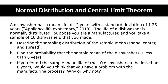New objective. A dishwasher has a mean life of 12 years and a standard deviation of 1.25 years. The life of a dishwasher is normally distributed. Suppose you are a manufacturer and you take a sample of 10 dishwashers. Part A: describe the sampling distribution of the sample mean — we want to discuss shape, center, and spread. Part B: find the probability that the sample mean life is less than eight years. Part C: if you found a sample mean of 10 dishwashers to be less than eight years, would you think you had a problem with the manufacturing process? Why or why not?